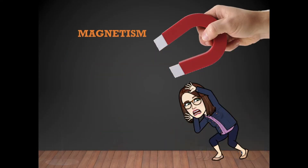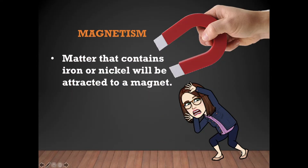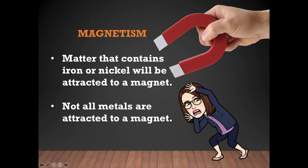The first one we're going to talk about is magnetism. Matter — anything that takes up space and has mass and contains iron or nickel — will be attracted to a magnet. Now not all metals are attracted to a magnet. You'll definitely have to make some observations to determine if the object is magnetic or has the physical property of magnetism.